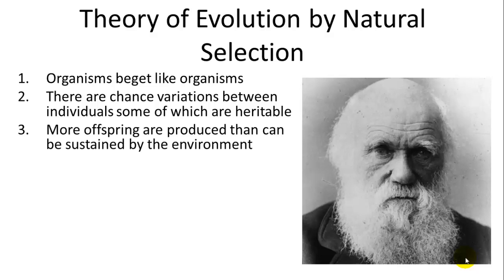More offspring are produced than can be sustained by the environment. This was something he thought of as he pondered the essay by Malthus, the economist, who also noticed this phenomenon in humans — there were lots of humans born and not all of them survived.